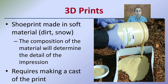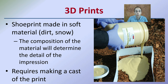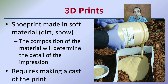For 3D prints — shoe prints made in soft material such as dirt or snow — the composition of the material will determine the detail of the impression. This often requires making a cast of the print. Dental stone, for example, with a small cardboard border to help it sit in place, is a great way to preserve those prints so they can be investigated, compared, and entered as evidence at a later date.